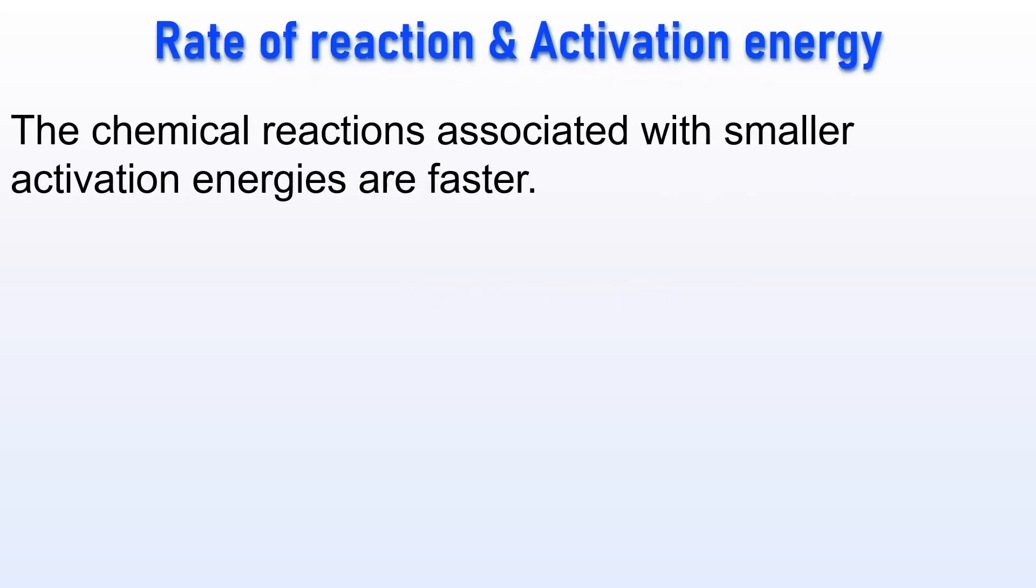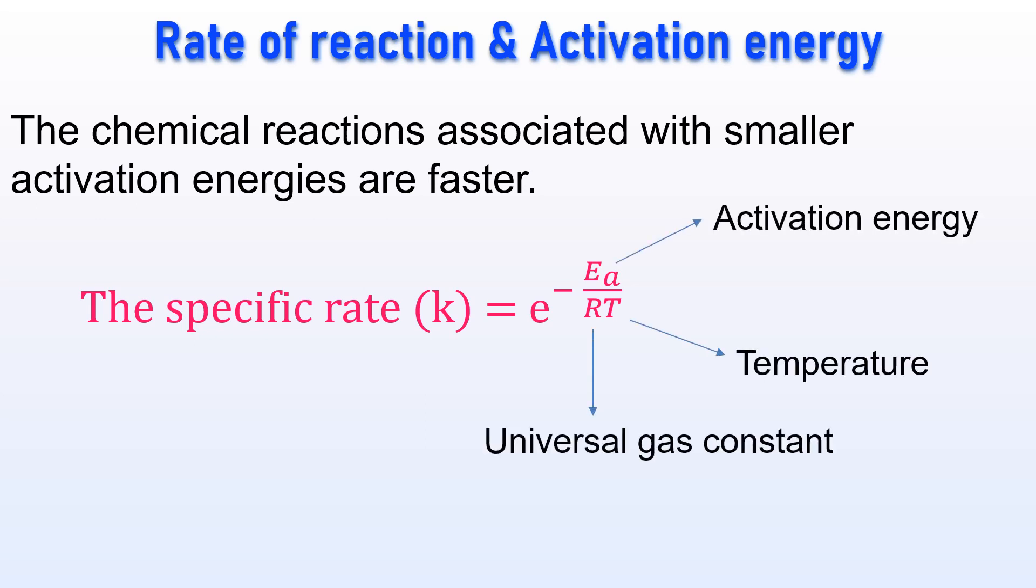Now let us see the relation between activation energy and rate of a chemical reaction. The chemical reactions associated with smaller activation energies are faster. The specific rate of a chemical reaction is given by E power minus Ea by RT, where Ea is activation energy and T is temperature while R is universal gas constant.